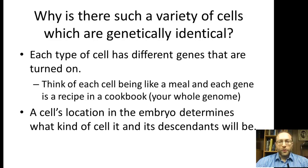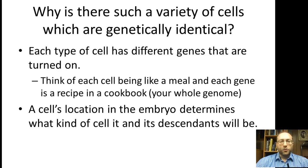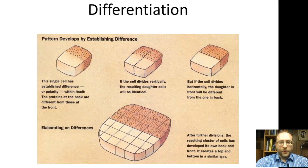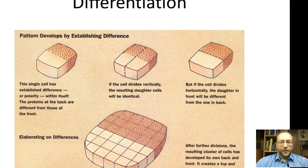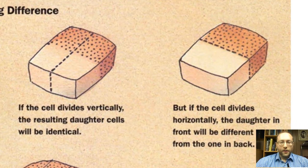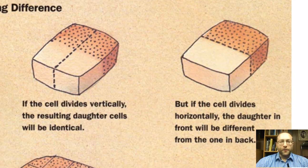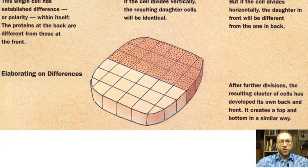How does a cell know which recipes to use? It's all from its location during development. That determines what kind of cell it is and what its descendants will be. If a cell divides vertically, you get identical cells; but if it divides horizontally, you get two cells in a different environment, and those cells can become different things. Different environments will turn different genes on and turn different genes off.